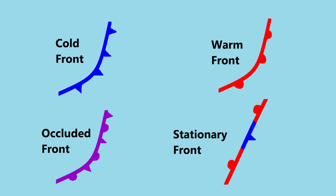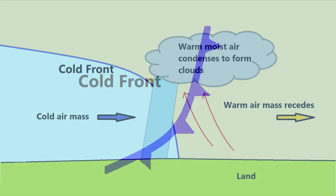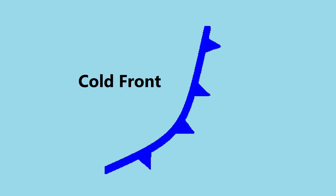There are four types of front most commonly seen on weather maps. A cold front is the boundary where a cold air mass pushes underneath a warm air mass, forcing the warm air mass upwards, which forms clouds and rain. A cold front is represented by a blue line with triangles pointing towards the direction of movement.